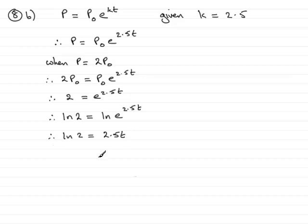So in order to get t, all I've got to do is divide both sides by 2.5, so we have the natural log of 2 divided by 2.5.